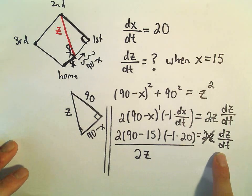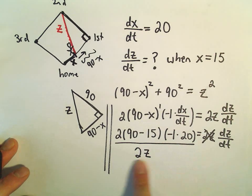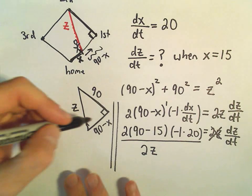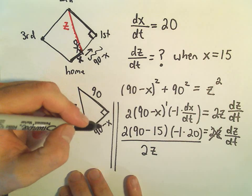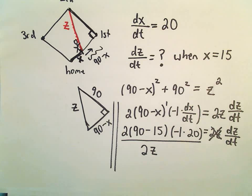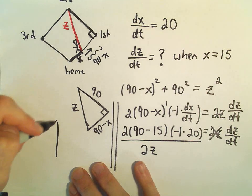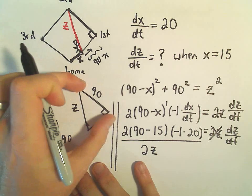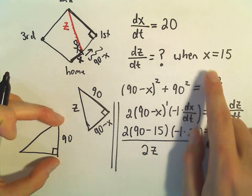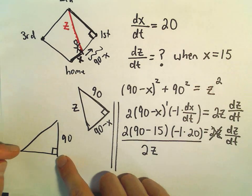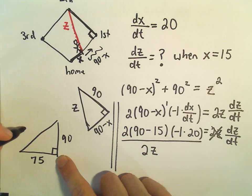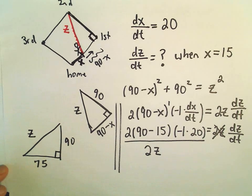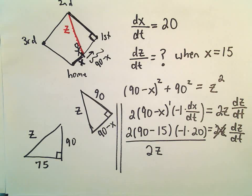But again, at that instance, when x equals 15, we can just think about our triangle here. Okay, so we know that this length stays 90. We know that x equals 15, so this length is going to be 75. And we can just use Pythagorean theorem to figure out a value for z.